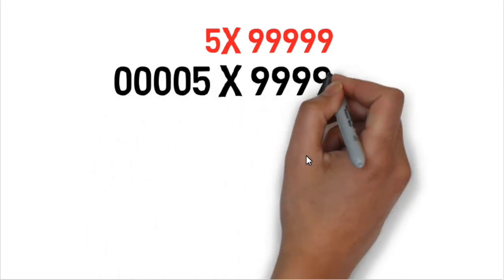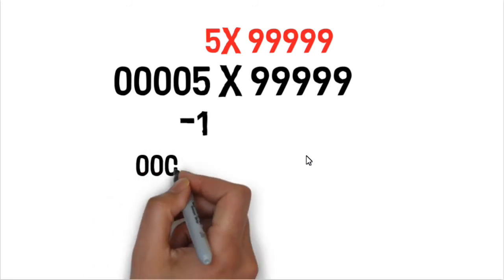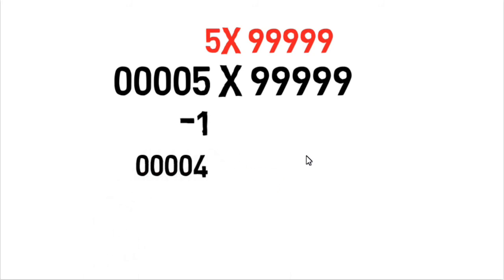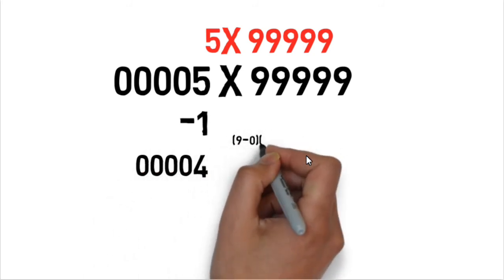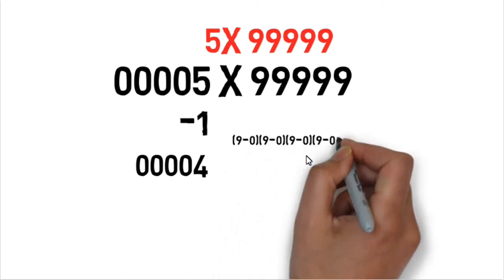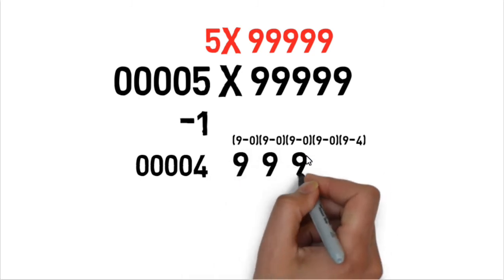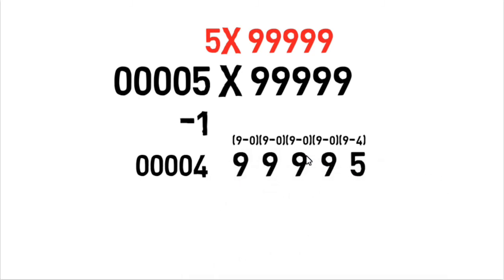And now take 5 multiplied by 5 nines, so we'll append 4 zeros in front of it and we'll subtract 1, so 00004, and the rest of the digits will come as shown on the screen: 99995. So the answer will be 499,995. So this is the answer.